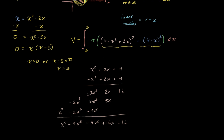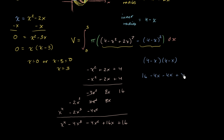Now for 4 minus x times 4 minus x: 4 times 4 is 16, plus 4 times negative x which is negative 4x, negative x times 4 is another negative 4x, and negative x times negative x is plus x squared. So switching the order we get x squared minus 8x plus 16.